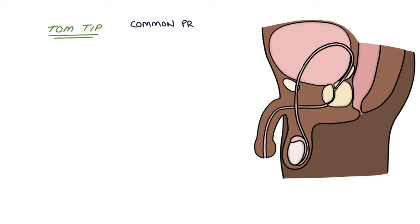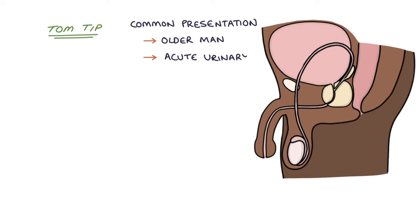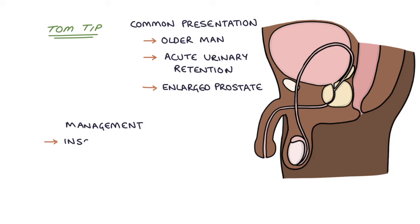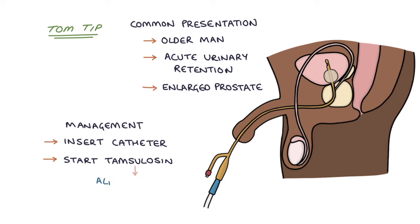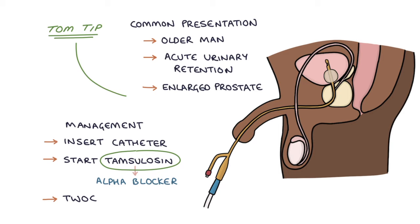A Tom tip: a common presentation requiring catheterization is an older man presenting acutely with urinary retention due to an enlarged prostate. Typical management involves inserting a catheter, starting the patient on tamsulosin — an alpha blocker — and then discharging the patient to have a trial without a catheter, or TWOC, in the community. It's worth remembering tamsulosin for your exams. The key side effect to remember is postural hypotension, leading to dizziness on standing or falls.